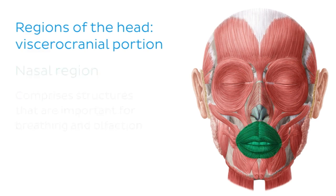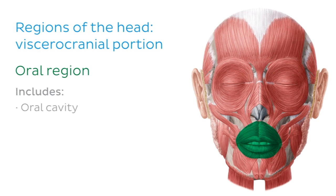The next region is the oral region of the face, which refers to the area of the oral cavity. This region includes the oral cavity itself as well as structures such as the teeth, the tongue, and the palate — the roof of your mouth.